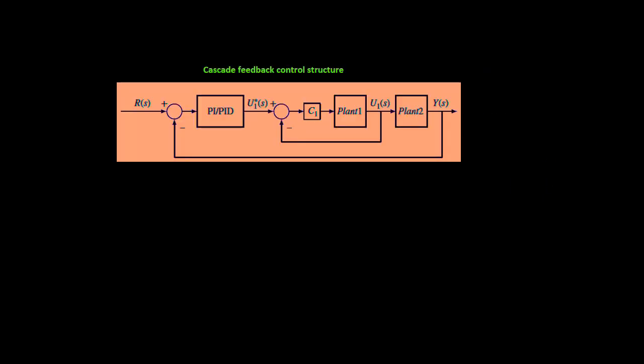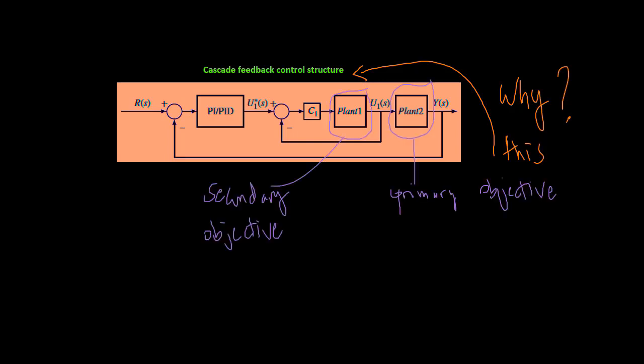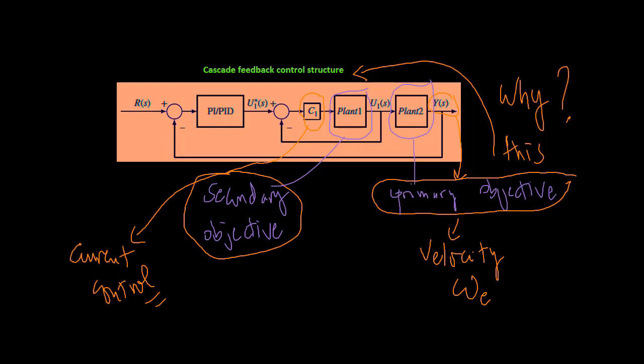This figure shows a cascade feedback control structure, which represents the control systems used in electrical drives. There is always a primary control objective combined with a secondary control objective when deploying a cascade control system structure. For the electrical drives, the primary objective could be to control an AC motor's angular velocity. However, the secondary objective is to regulate the current flow.